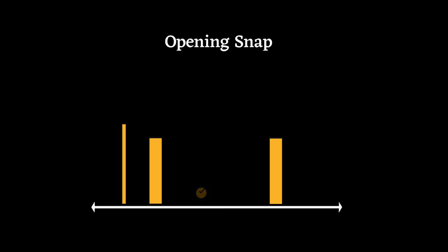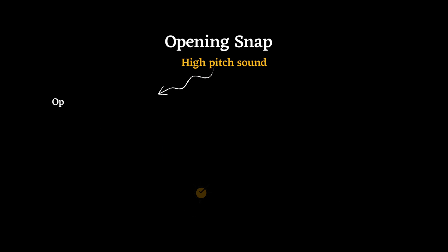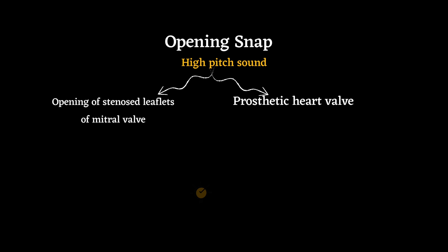The last sound is the opening snap, which occurs early in diastole. It differs from S3 because it is a high-pitched sound that occurs due to the opening of stenotic leaflets of the mitral valve and prosthetic heart valves.